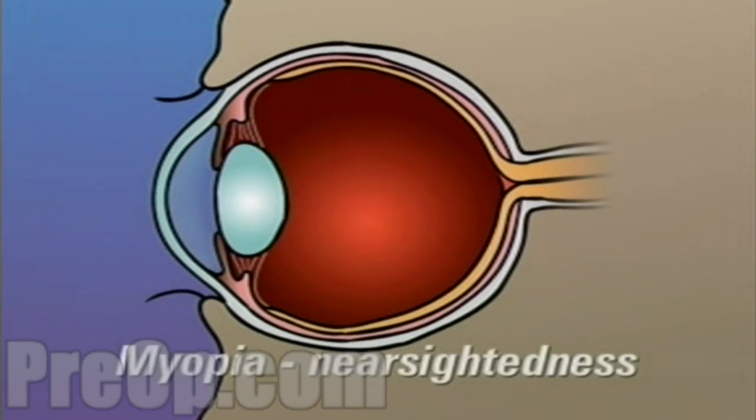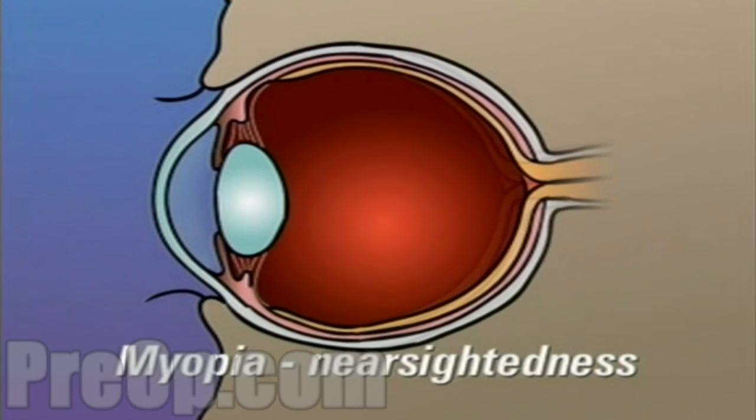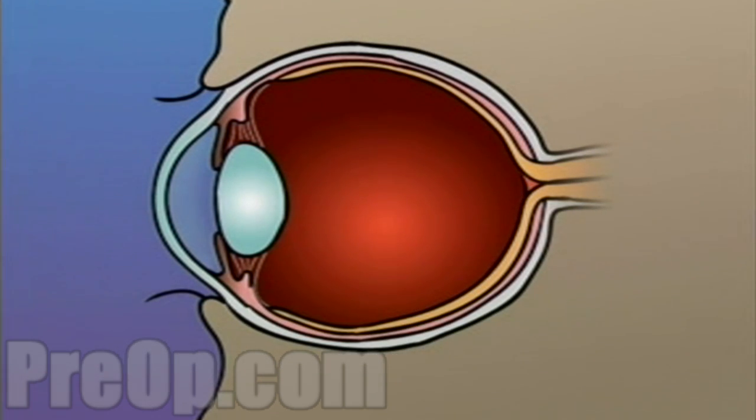Myopia or nearsightedness occurs when the shape of the eye is too long or the curve of the cornea is too extreme. In this case, light rays are focused on a point in front of the retina instead of on the retina itself.